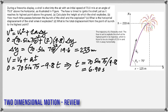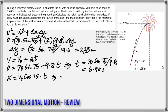Part C asks: what is the horizontal displacement of the shell when it explodes? Since it's horizontal displacement, you use the horizontal initial velocity, which is constant. With constant velocity, the only equation is displacement equals velocity multiplied by time. So x equals V₀ cosine 75 multiplied by the time. You should get 125 meters.